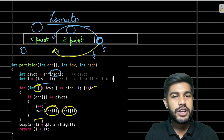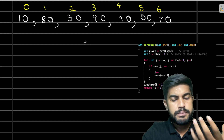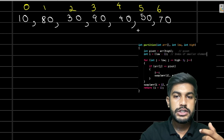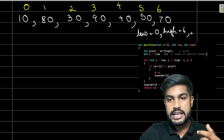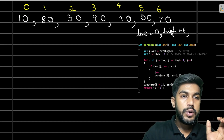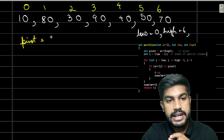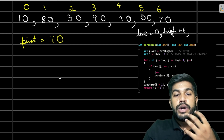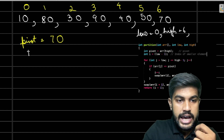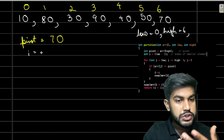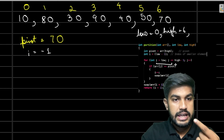Let's do a dry run to understand how this works. Low is 0, high is 6, and the array is [10, 80, 30, 90, 40, 50, 70]. The pivot element is a[high] = a[6] = 70. We initialize i = low - 1 = -1. We then run a for loop for j from low (0) to high - 1 (5).